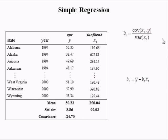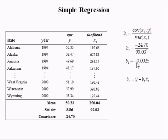To compute the estimate of the slope, we substitute in the covariance of X and Y, which is negative 24.7 percent-dollars, and the variance for X, which is the square of the standard deviation. The units in the numerator are percent-dollars and in the denominator are dollars-squared. Dollars cancel, leaving a slope equal to negative 0.0025 percent per dollar.